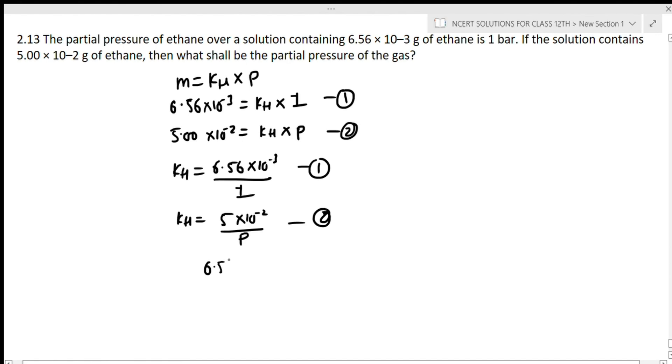After substituting, this will be written as 6.56 × 10^-3 upon 1 equals 5 × 10^-2 upon P. You can cross multiply and get the answer is 0.762 bar, which is the final answer.